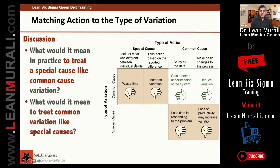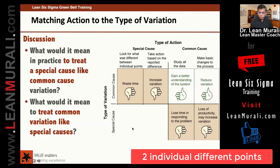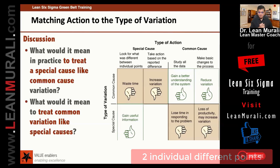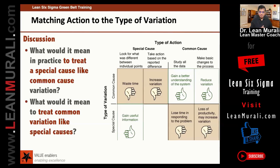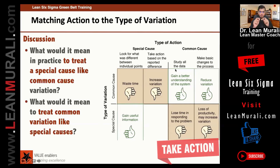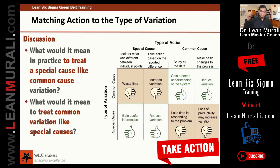And if it is a special cause, you have to look at the difference between two individual points. If you look at the difference between two points, you will get useful information. And if it is a special cause, you have to take action based on the reported difference — and by acting on that one point, you will reduce variations.